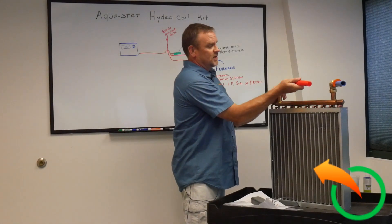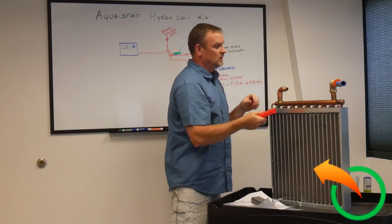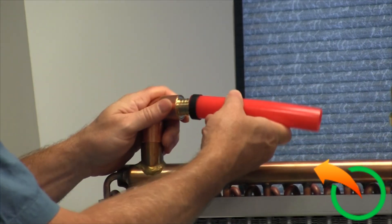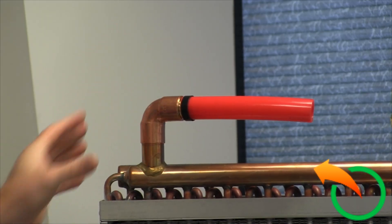So the first style is what I call crimp or barb. It's a copper fitting that you solder on and you put your PEX pipe on and you have a crimping tool that crimps this ring and seats it.